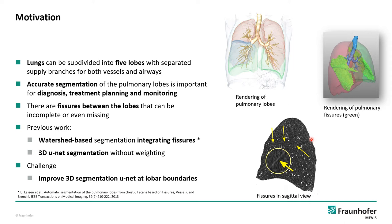We have developed over many years a watershed-based segmentation for the lobes. It works quite well but has limitations. For cases with severe diseases the results could be better. Therefore we trained a 3D U-Net for lobe segmentation. It was only a preliminary study with only a few datasets. The first impression was that the segmentation results are not bad, but the segmentation could be a bit more accurate at the lobar boundaries. So our challenge was to improve the 3D U-Net to be more accurate at the lobar boundaries.